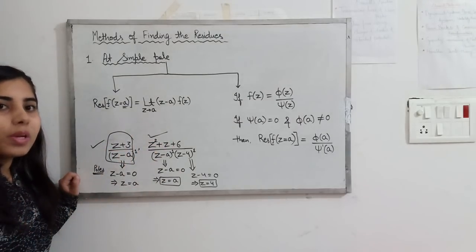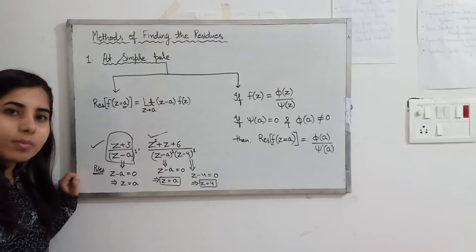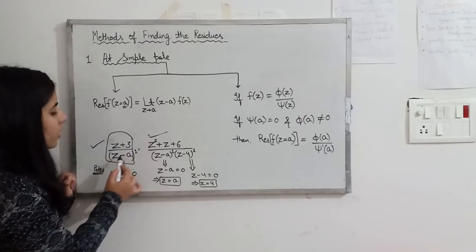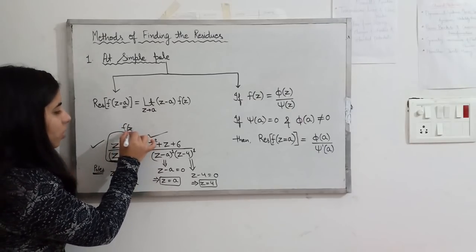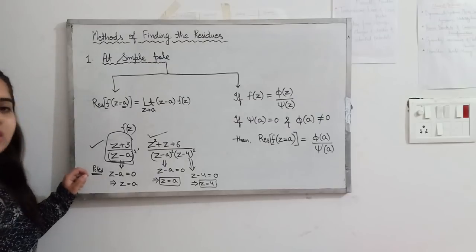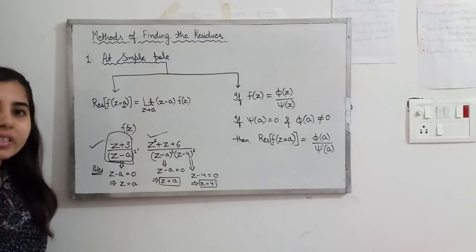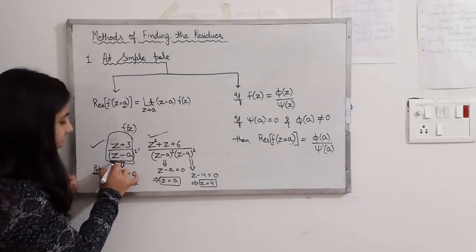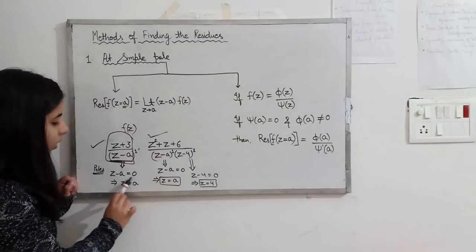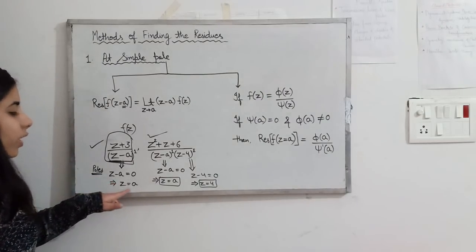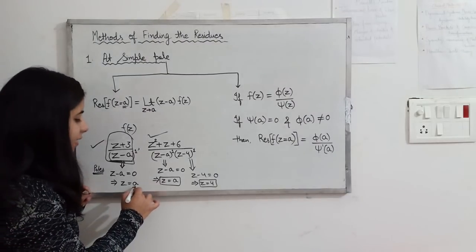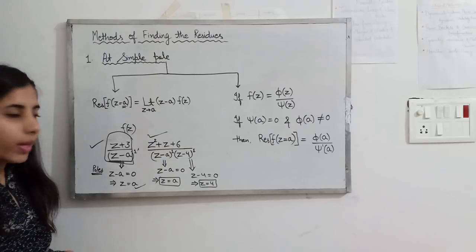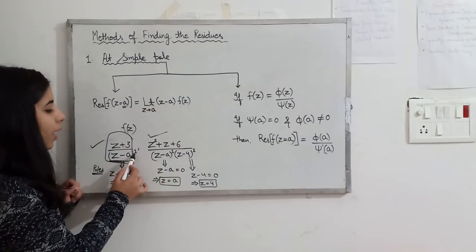What is a simple pole? We will understand it through conditions and an example. To find the pole, we equate the denominator to zero. So denominator (z − a) = 0 gives z = a. This is a simple pole because the overall power of (z − a) in the denominator is 1.